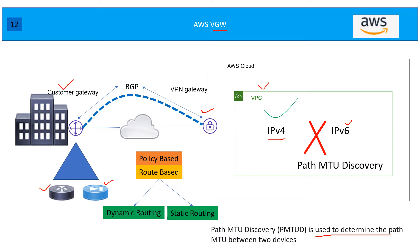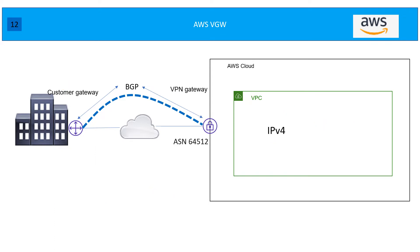When we talk about VPNs, they are either policy-based or route-based. In policy-based, we configure Phase 1, Phase 2, and you need to define the routing domain or encryption domain. In route-based, you configure tunnels on both ends and then run some sort of routing — you can either go for dynamic routing or static routing.